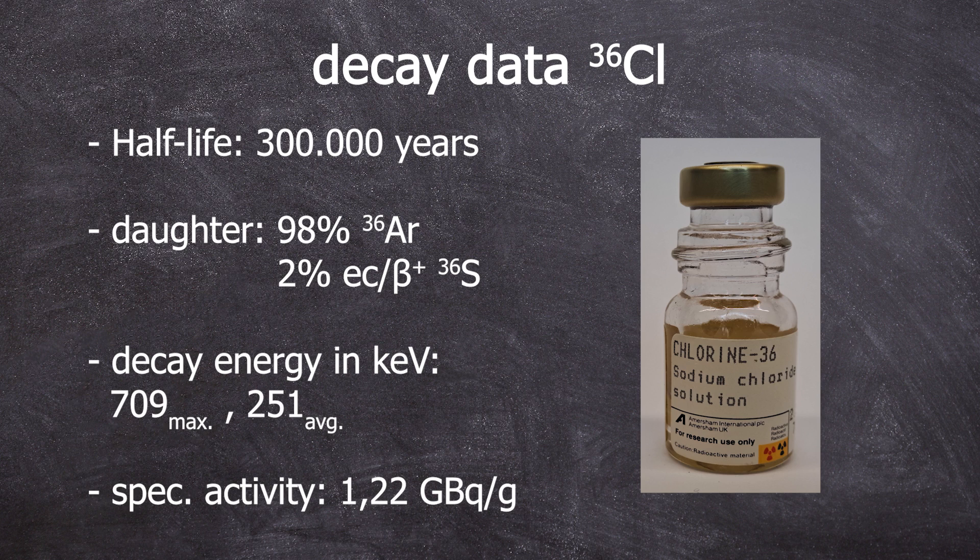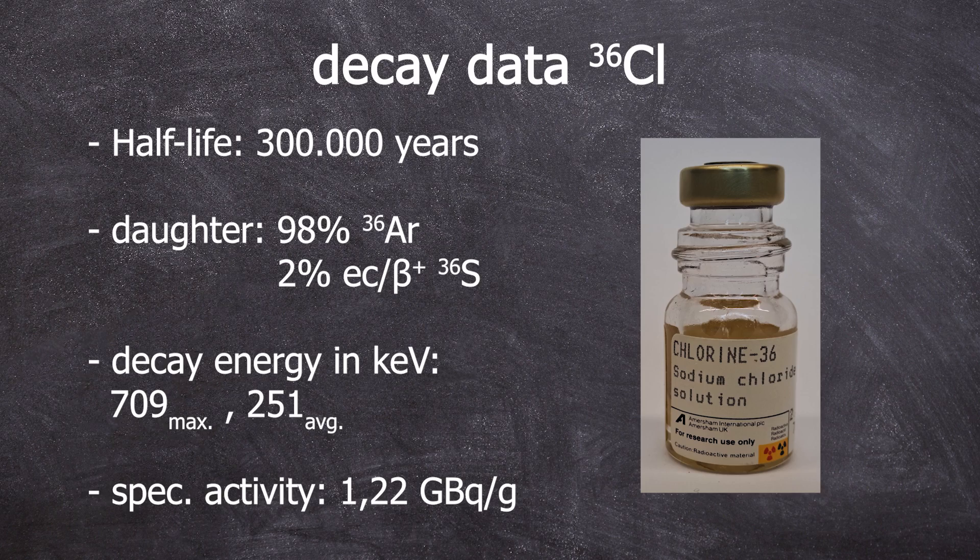The beta energy is 709 keV maximum and 251 keV on average. So it's these moderately energetic betas that come through the glass causing a dose rate of 2 µSv per hour which is quite impressive.